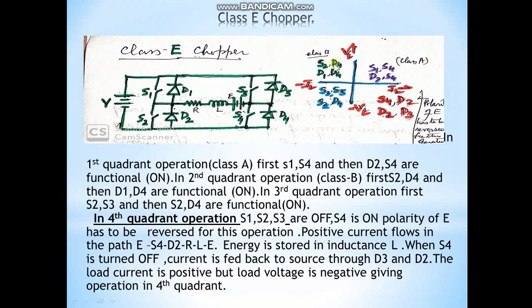For second quadrant operation (Class B), switches S2 and D4 are functional, meaning current flows in the negative direction — so load current is negative. When D1 and D4 are on, the load voltage is positive. So in second quadrant operation: voltage is positive and load current is negative.